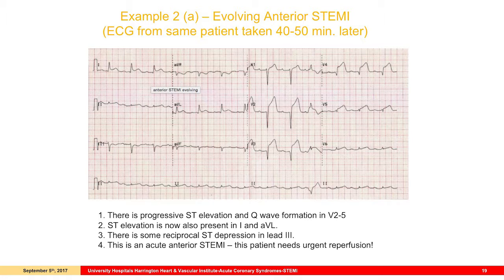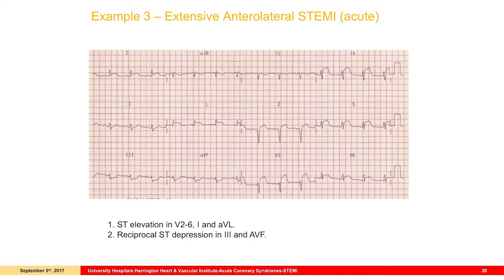Example 2, same patient, 40–15 minutes later — now it's really obvious. When you do this for a while, you look at an EKG and make the diagnosis in nanoseconds. If someone throws an EKG in front of my eyes, you can know in a tenth of a second that this person has a STEMI when it's obvious. For the extensive anterolateral pattern: J-point elevation from V2 through V3, V4, V5, V6, 1 and AVL, with reciprocal ST depression — it's a no-brainer. No one's ever going to miss that.